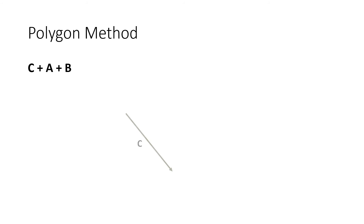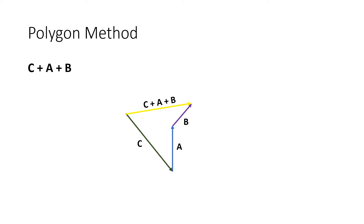And lastly, we have C plus A plus B. This is our vector C. We connect vector A, and lastly we have vector B. If we connect the initial point of vector C to the endpoint or arrowhead of vector B, we form our resultant vector — the same as the resultant vector from our two previous examples. This is our resultant vector, we call it C plus A plus B. The direction should still be the same as what we got from the two previous examples.